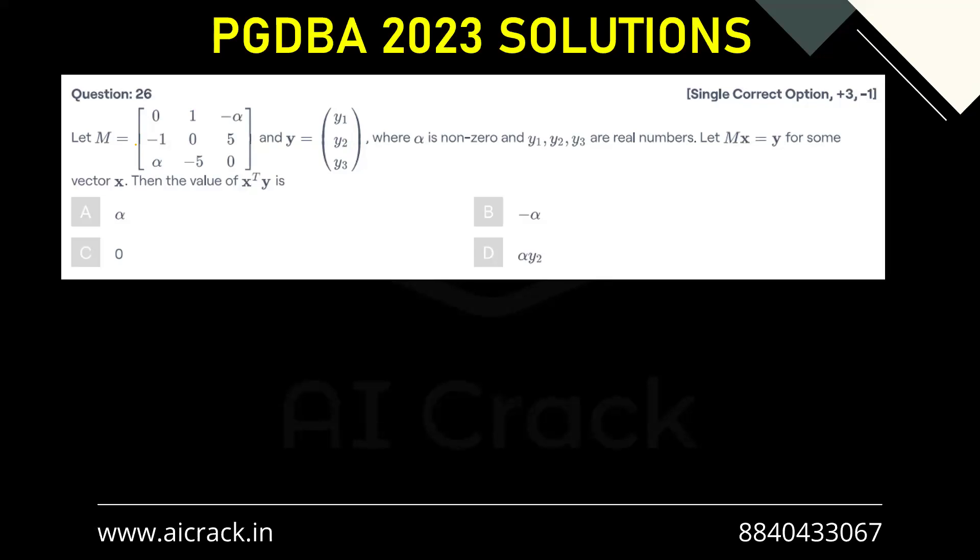Let's solve question M26. Let M equal this matrix and Y equal this column matrix where alpha is non-zero and y1, y2, y3 are real numbers. Let MX equal Y for some vector X, then the value of X transpose Y is...